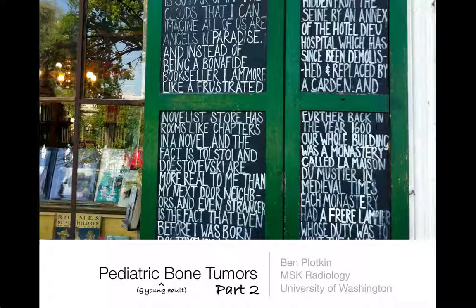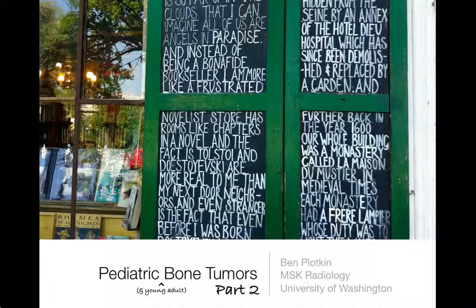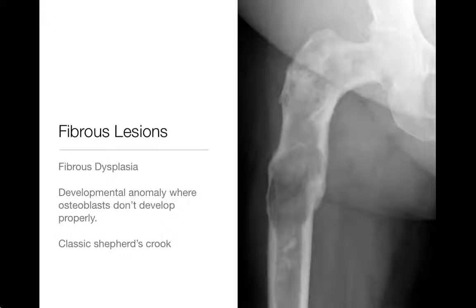Hi, welcome back. This is part two of pediatric bone tumors. We're going to finish talking about the different types of bone tumors commonly found in children and young adults. Last time, we just ended with talking about non-ossifying fibromas, or fibrous xanthomas. We'll finish up talking about the other main fibrous lesion, which is fibrous dysplasia.